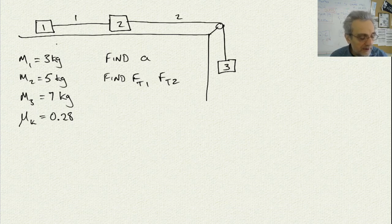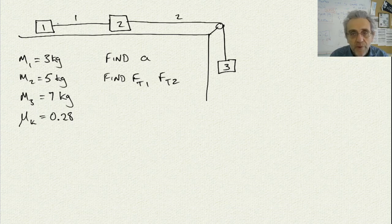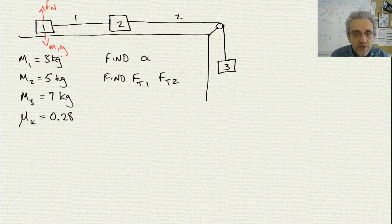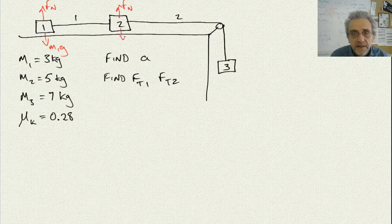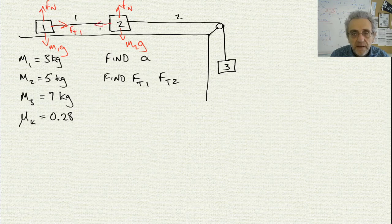So let's go ahead and put down our forces on this system first. We'll go with maybe red. So here we have Fn, M1g, Fn, M2g. We've got Ft1, Ft1.